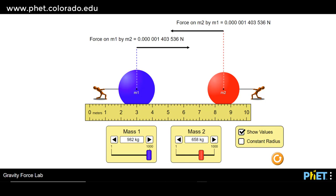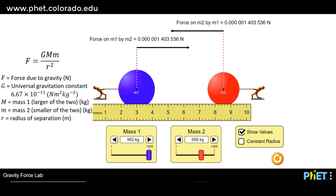The PhET simulation of the Gravity Force Lab is another way of looking at Newton's Law of Gravity. We know that F equals G M1 M2 over R squared, where F is the force between the two objects due to gravity, G is the universal gravitation constant, M1 is the first mass and M2 is the second mass, divided by R squared, where R is the radius of separation or the distance between the two center of masses. The universal gravitational constant has a value with an exponent of 10 to the negative 11.